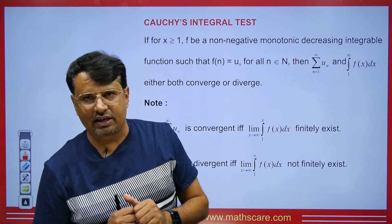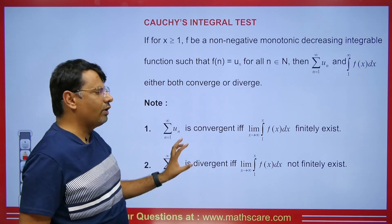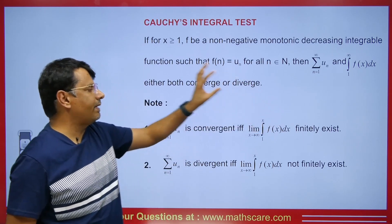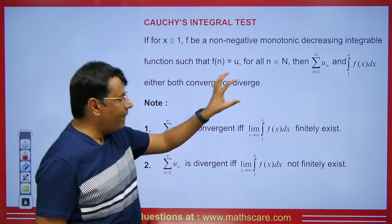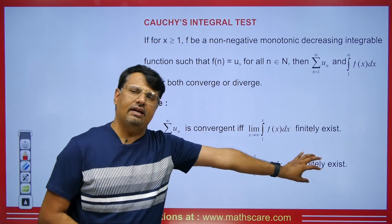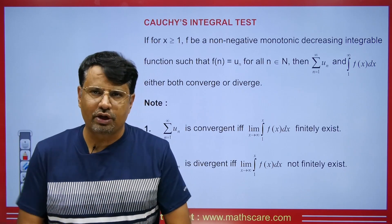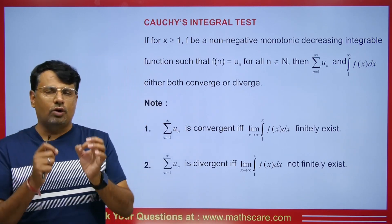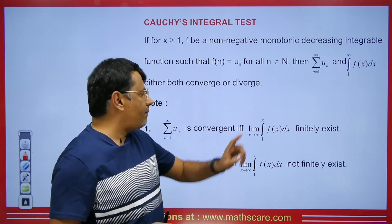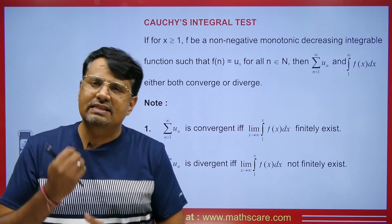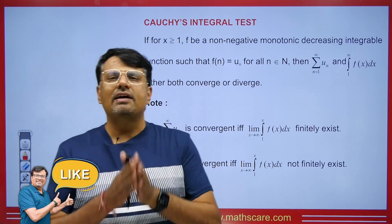If we can get the value of the summation of U_n to exist finitely, only then it will be convergent, otherwise not. On the other hand, if the value does not exist finitely, then this series will be called divergent. Therefore, for an infinite series we can use integration to determine whether its improper integral exists finitely, and if yes, its corresponding series will converge.